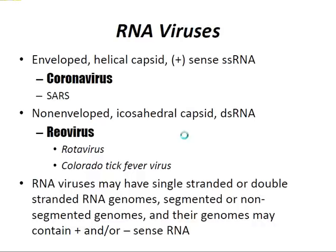Moving to RNA viruses. There are enveloped helical capsid positive-sense single-stranded RNA viruses. There are non-enveloped icosahedral capsid double-stranded RNA viruses — the reoviruses — which include rotavirus and Colorado tick fever virus. RNA viruses may have single-stranded or double-stranded RNA genomes, segmented or non-segmented genomes, and their genomes may contain positive and/or negative sense RNA.